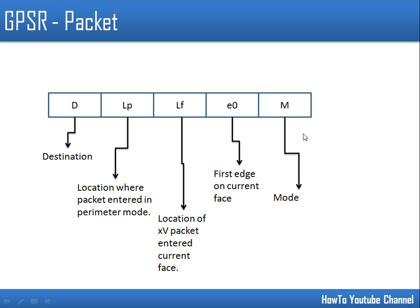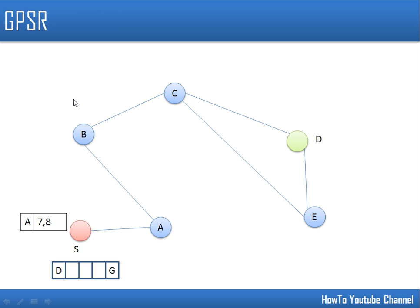The mode field can be either greedy or perimeter. Initially, when a node sends a packet, the mode is set to greedy. In this network, node s has only a single neighbor and has to send data to node d. The packet is initialized with destination d (as a location), and the mode is marked as greedy. In greedy forwarding, s forwards the packet to the neighbor which is closer to destination d than s itself.